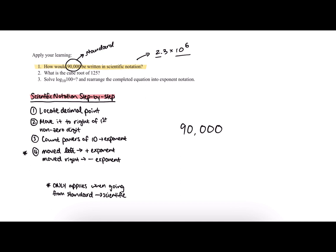Step one says to locate the decimal point. In this case our decimal point is not really obvious, it's not written out for us already, but we can assume that it's at the very end of the number since 90,000 and 90,000.0 are equivalent in value.